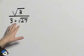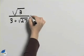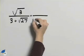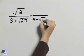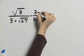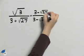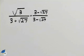To simplify this expression, we need to rationalize the denominator. And we'll do that by multiplying by 3 minus the square root of 27 over 3 minus the square root of 27.